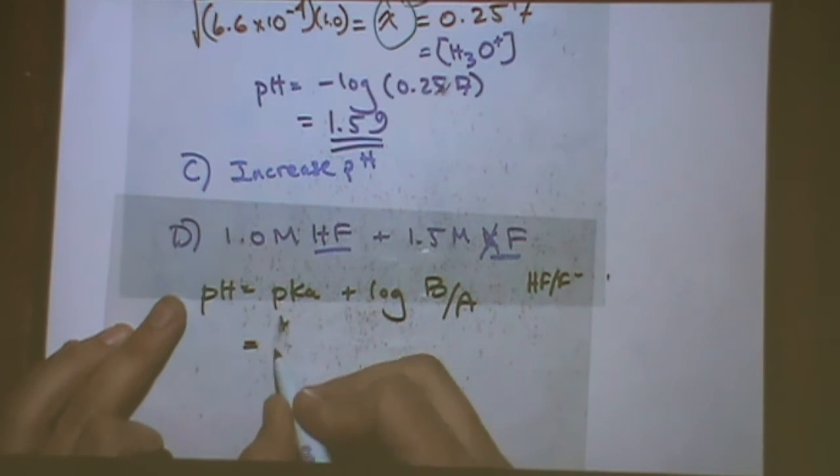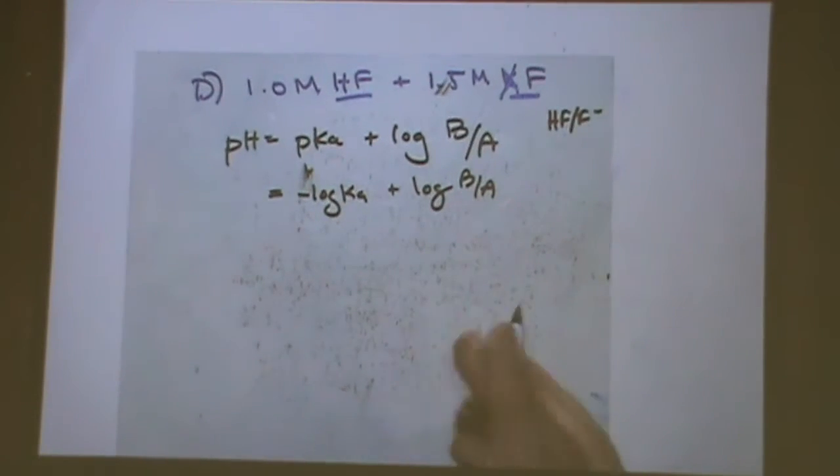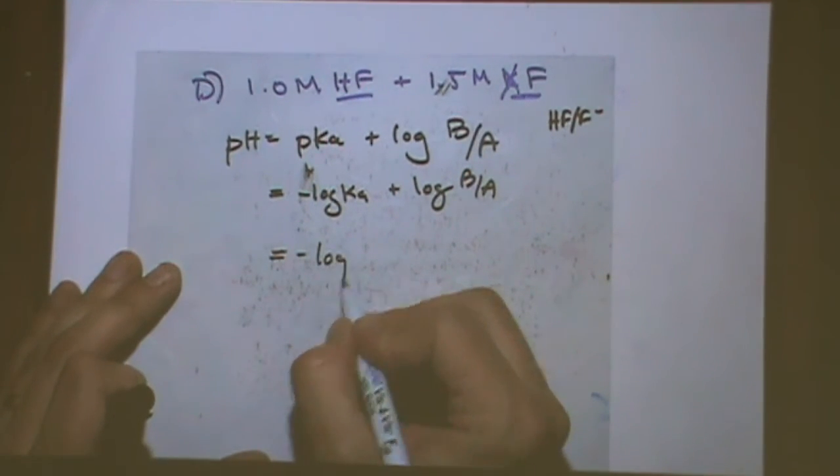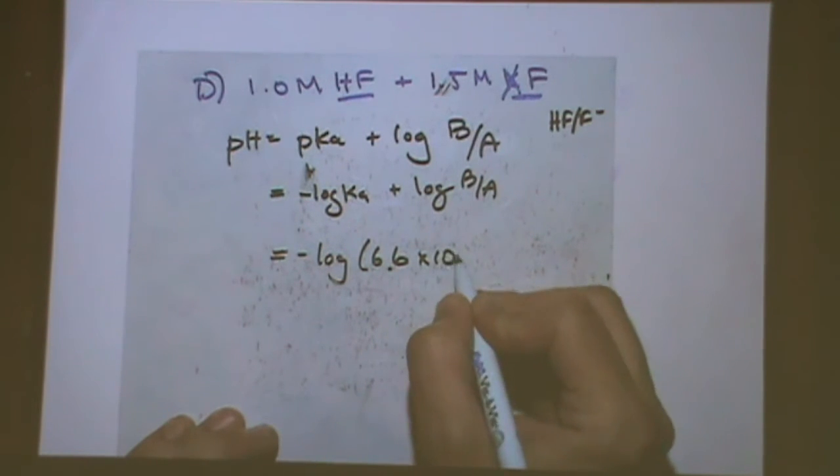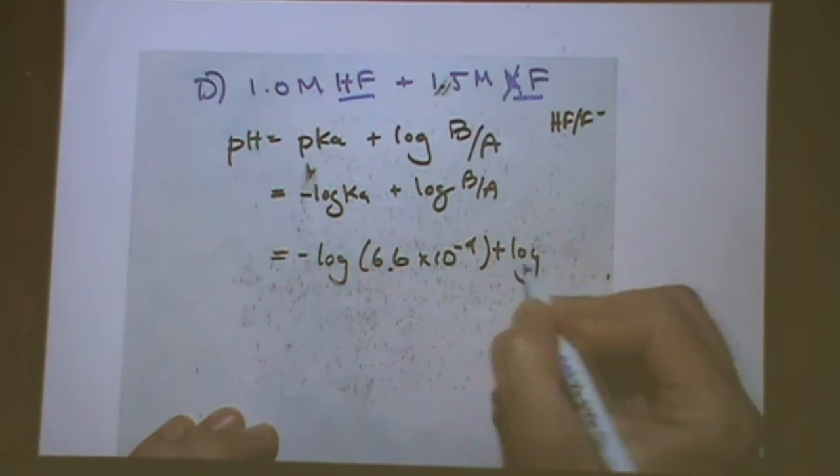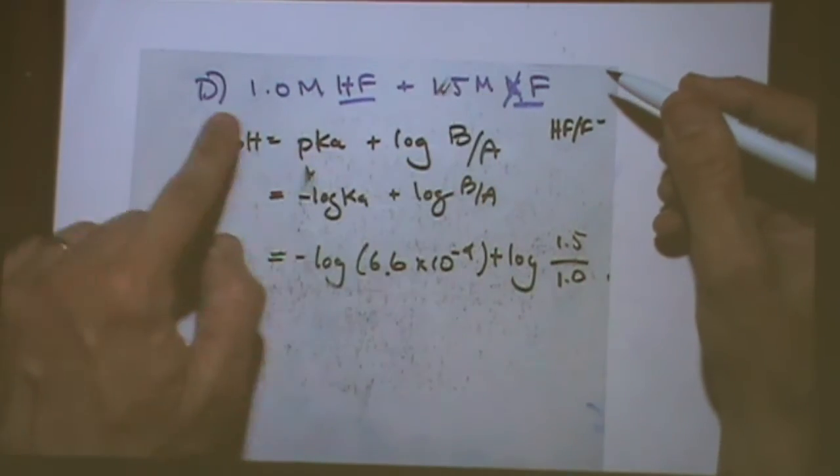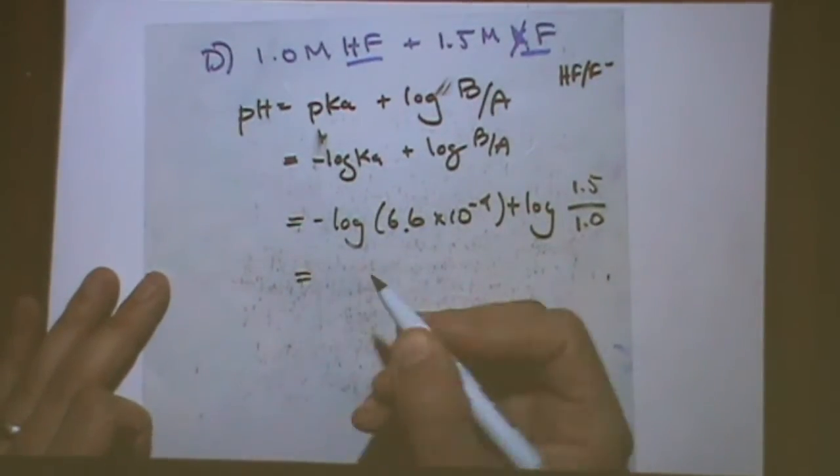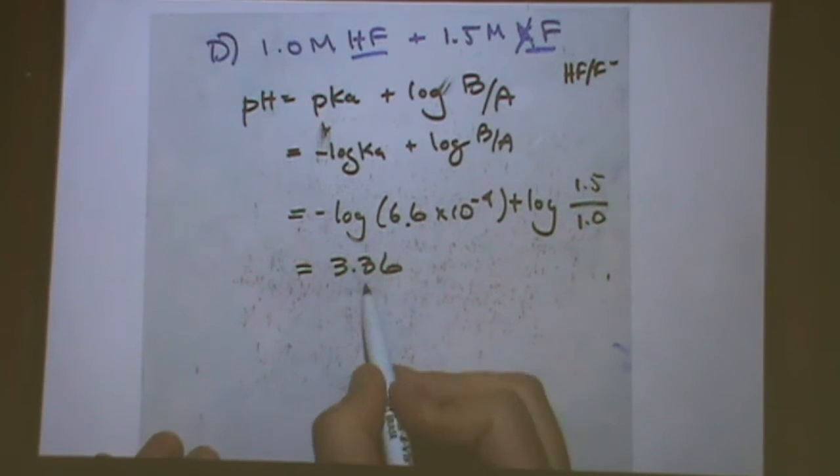Okay. pKa. That's the negative log of the Ka. I have plus the log of the base over the acid. Negative log of the Ka was given in the previous part. 6.6 times 10 to the minus 4 plus the log of the base concentration. What number goes in the numerator? The base. Which is F minus. What number? 1.5 and 1 would have to go here. So the base over the acid. 1.5 over 1. This turns out to be 3.36. What was the answer to the previous part? 1.59. So when I added the base, the pH went up. That's what we expected. So this worked exactly as we hoped. The pH went up. I have now generated a buffer.